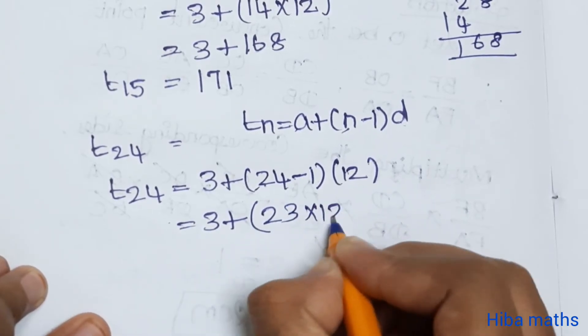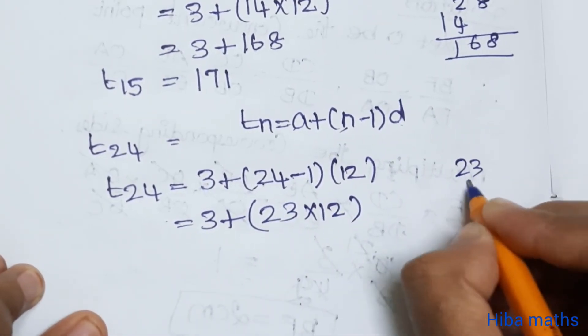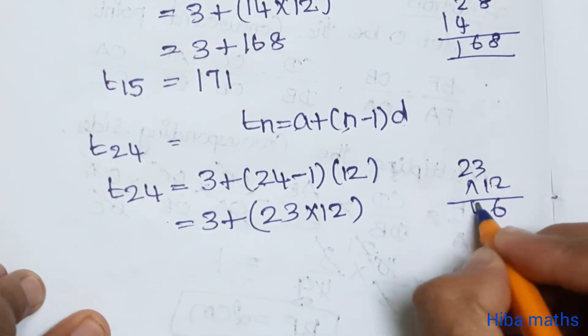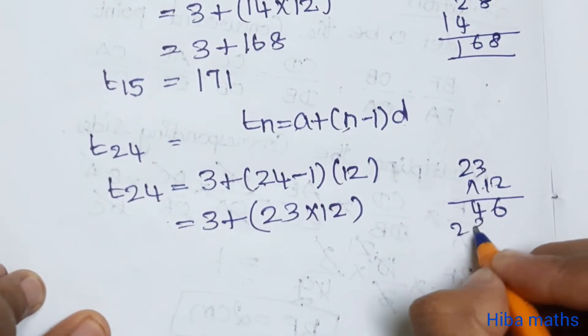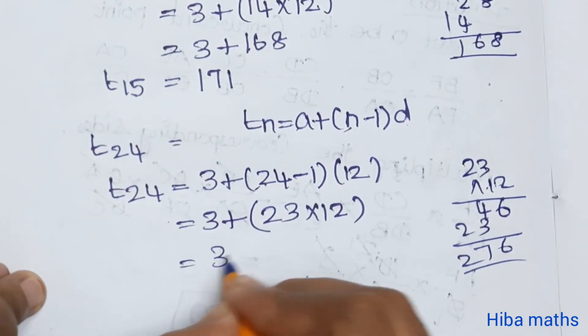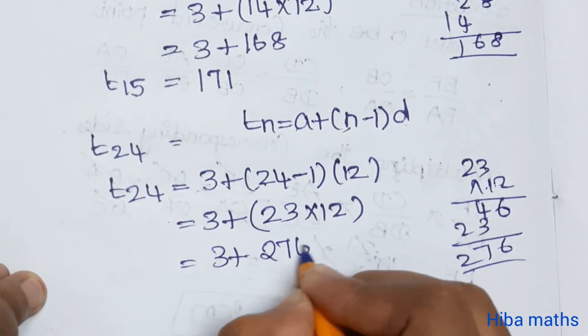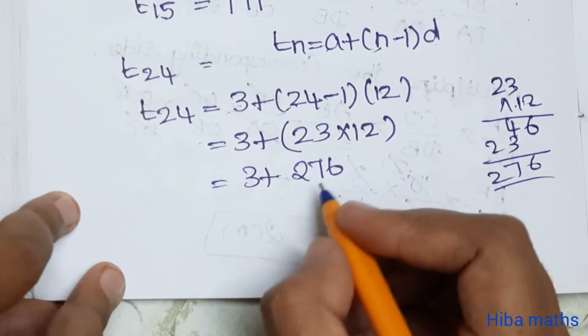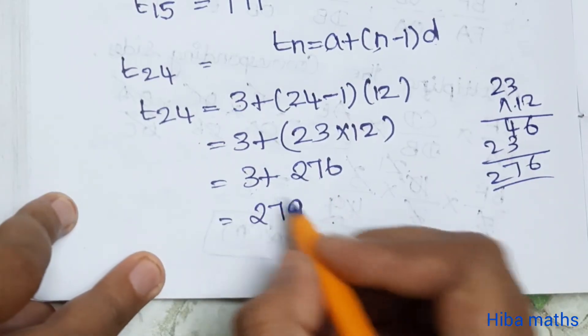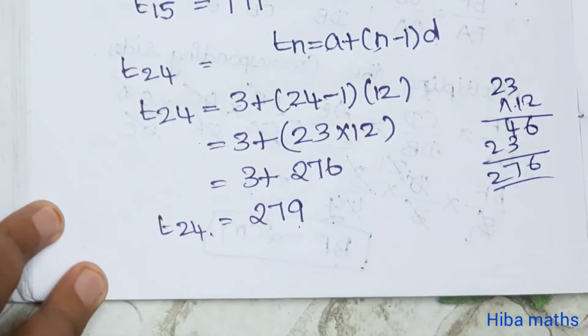So t of 24 is equal to 3 plus 24 minus 1 and d equal to 12. So 3 plus 24 minus 1 equal to 23 into 12. 23 into 12 is equal to 276. 276 plus 3 is 279. So t of 24 is equal to 279.